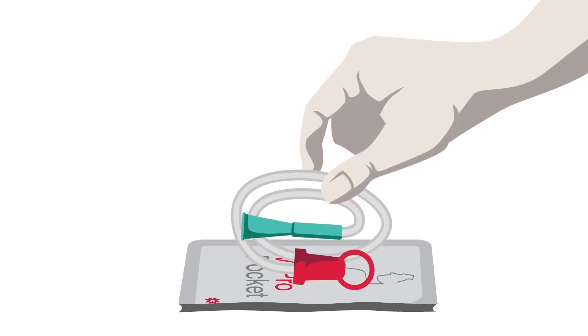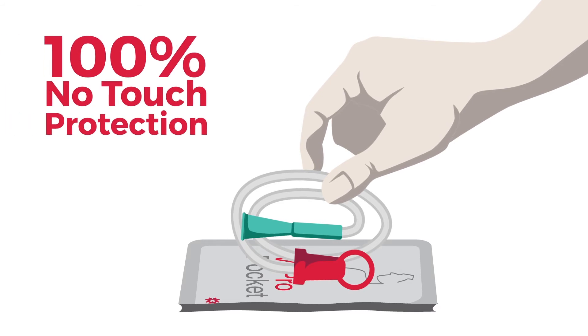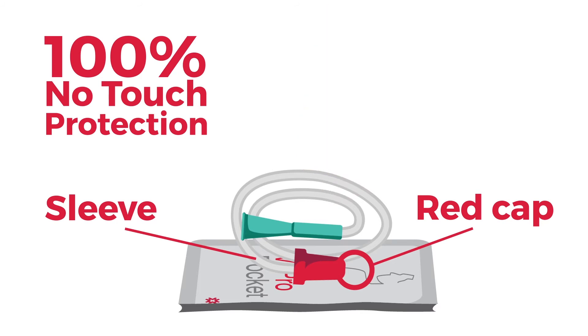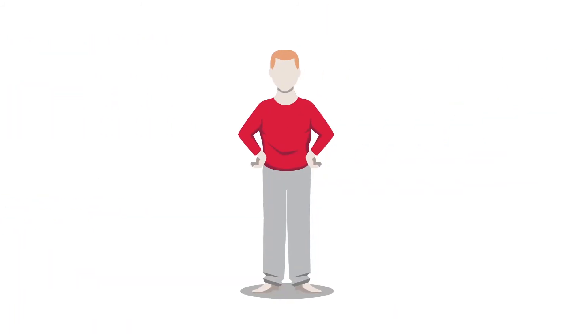The Vapro Pocket Catheter with 100% no-touch protection is still sterile outside of the package due to the red cap and the sleeve. Now you can touch the catheter anywhere. Before you insert the Vapro Pocket Catheter into your urethra, assure you follow the next steps.